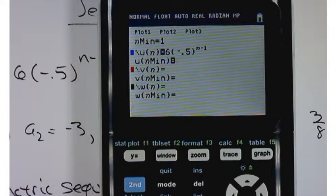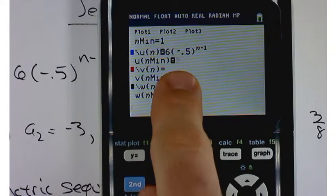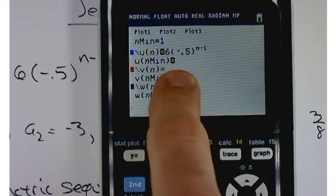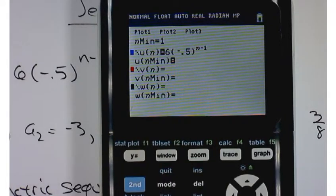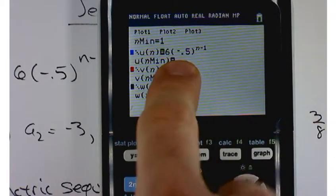So we're good. Sometimes if these sequences are defined recursively, it's asking you for like a sub 1 or a sub 2. But we don't have to worry about that because this is not a recursive sequence.